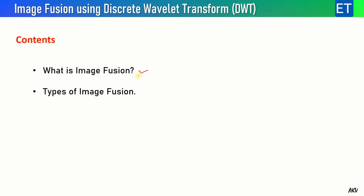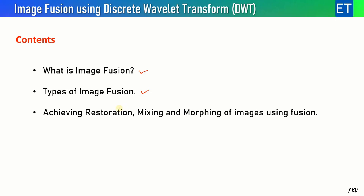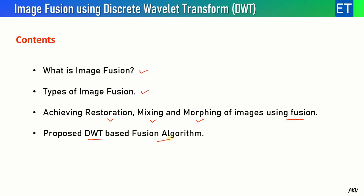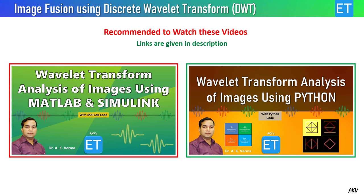Let's go through the contents of this video. First I will explain what image fusion is, then the different types of image fusion methods, and then how we can achieve image restoration, mixing, and morphing using image fusion. Then I will explain the proposed discrete wavelet transform based fusion algorithm, followed by the MATLAB code for fusion of color images.